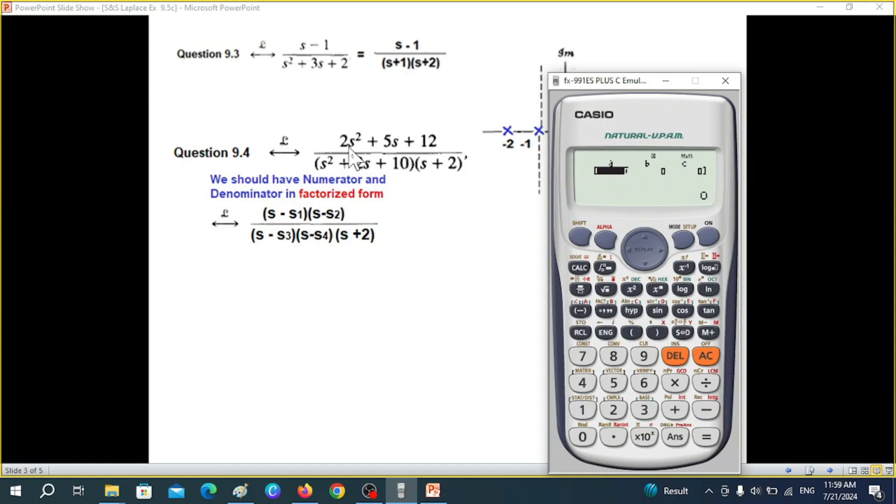So a in the first case is 2 numerator equal sign. Then is the b 5 equal sign and c is 12 equal sign and then again we press equal sign to get the roots.